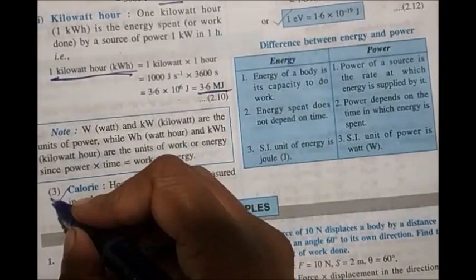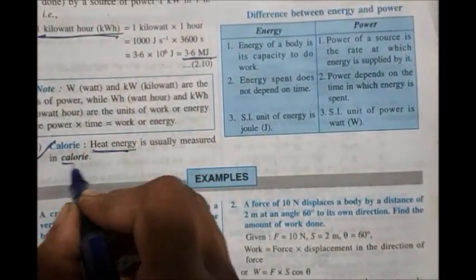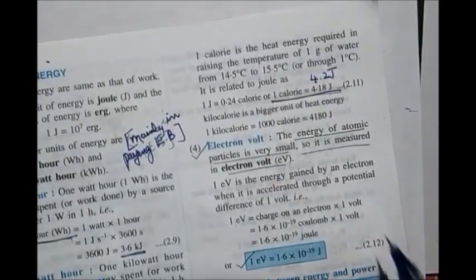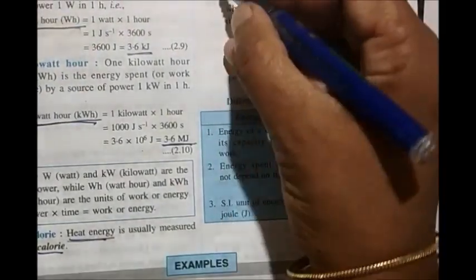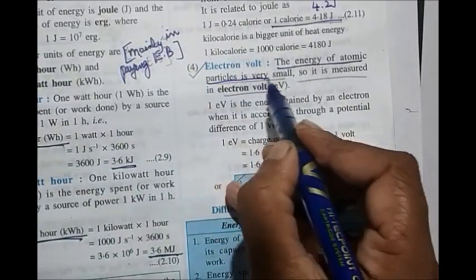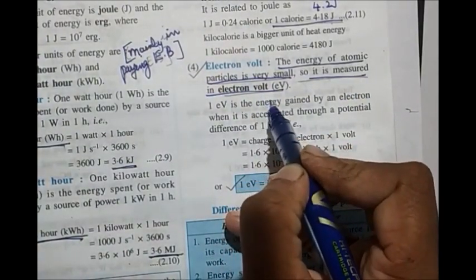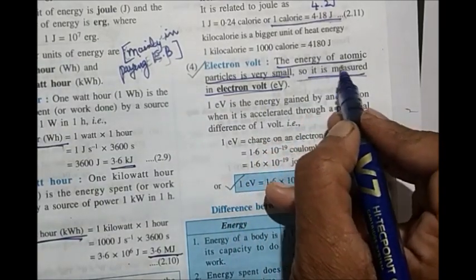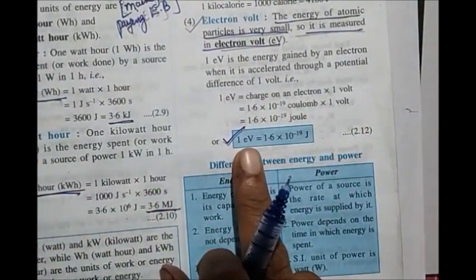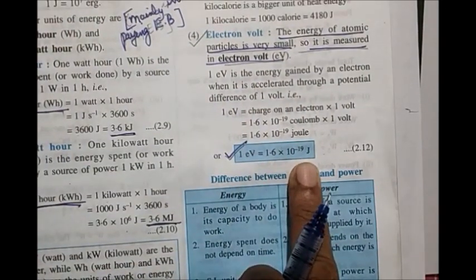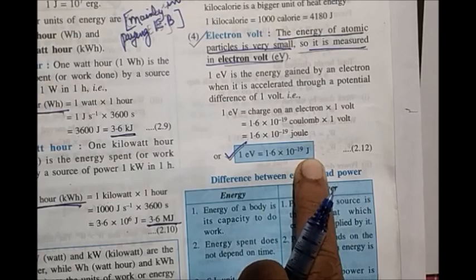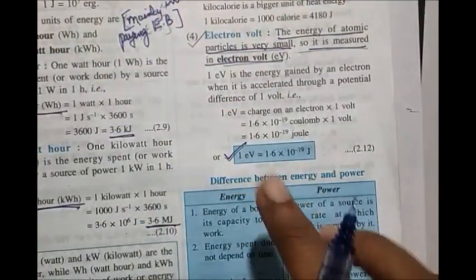Heat energy is measured in calorie; one calorie = 4.2 joule. Energy of atomic particles is measured in electron volt — this came in this year's board exam. The question asked: what unit is used to measure energy of atomic particles? Answer: electron volt. Also give the value: 1 eV = 1.6 × 10⁻¹⁹ joule. Know the unit and conversions.